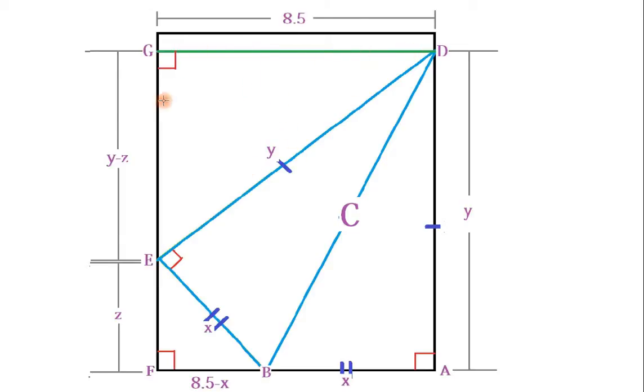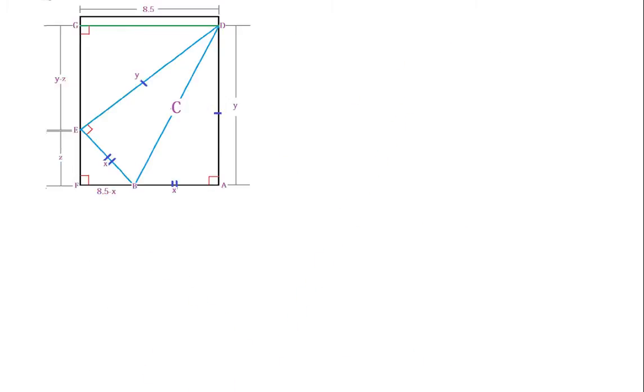Now, notice this green line. The purpose of this green line is to create another triangle from the point where the crease starts. So there's this extra length that I'm not going to use for this exercise. Now let's start with the Pythagorean theorem.